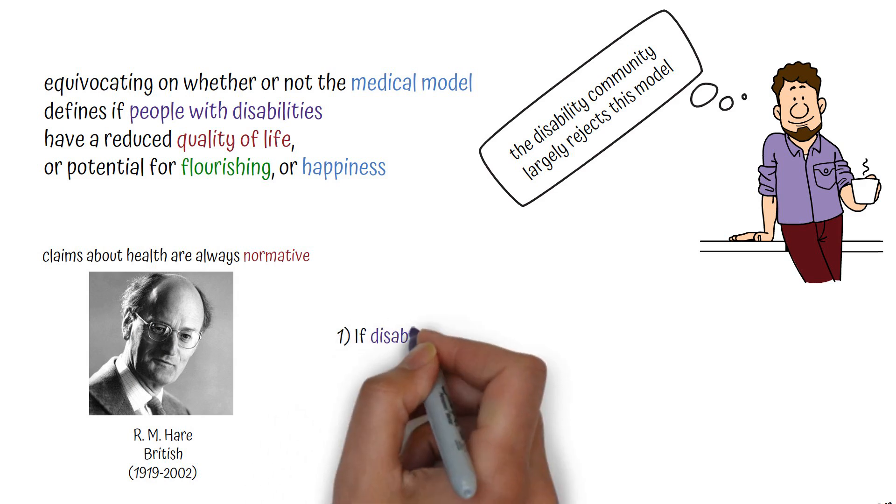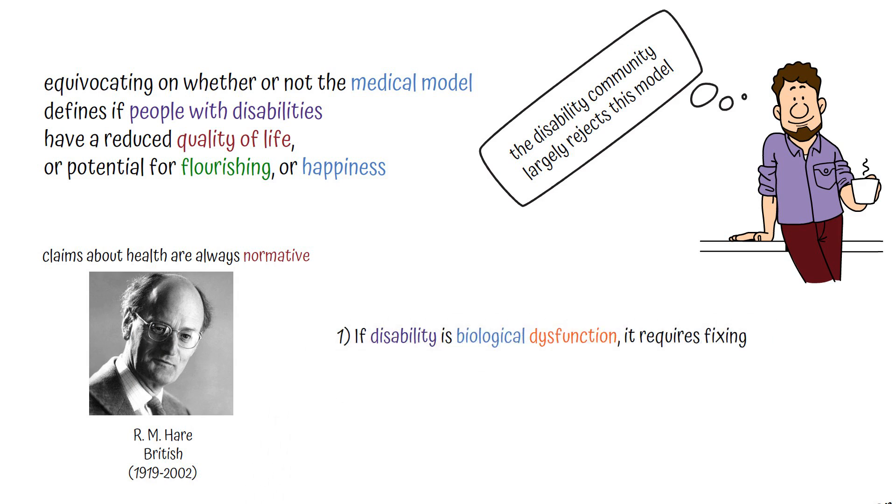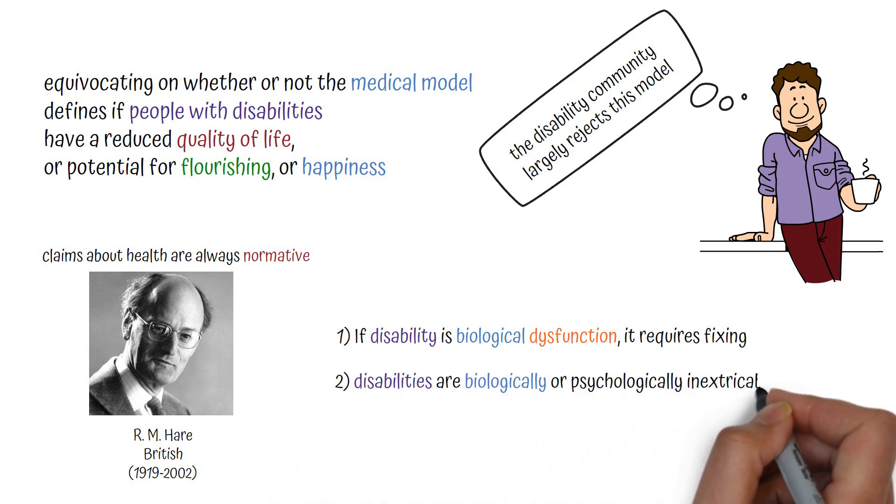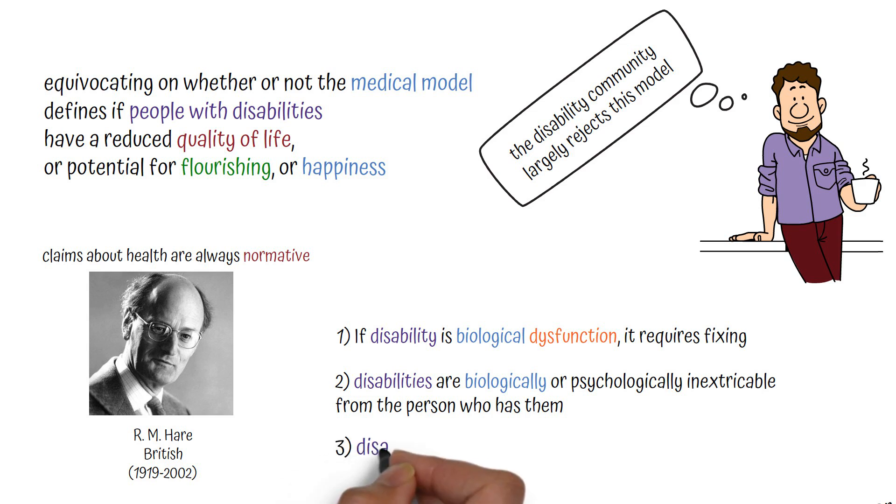If disability is biological dysfunction, it requires fixing. We may even have a moral duty to fix it. And if disabilities are biologically or psychologically inextricable from the person who has them, as both may seem logically to be the case and as many people in the disability community argue, that seems to imply that disabled people need fixing.